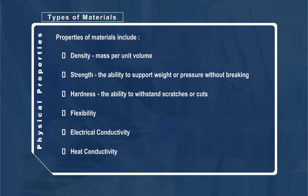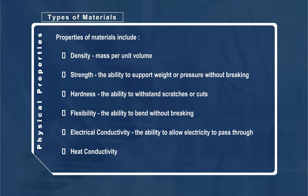The hardness of a material is its ability to withstand being scratched, cut, or broken. The flexibility of a material is its ability to bend without breaking. The electrical conductivity of a material is its ability to allow electricity to pass through. The heat conductivity of a material is its ability to allow heat to pass through.